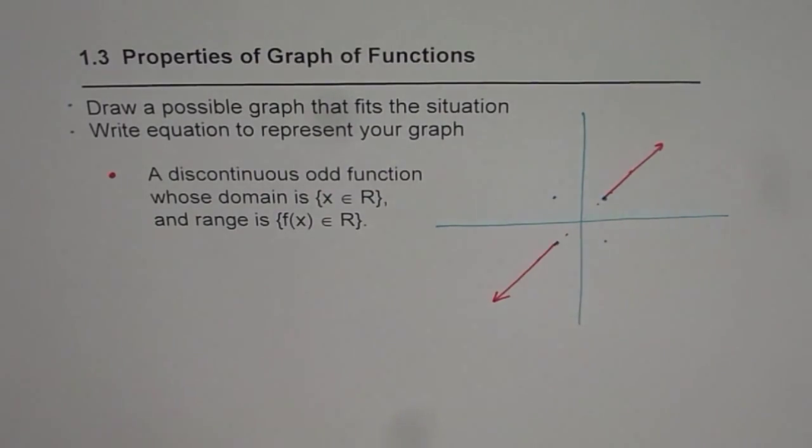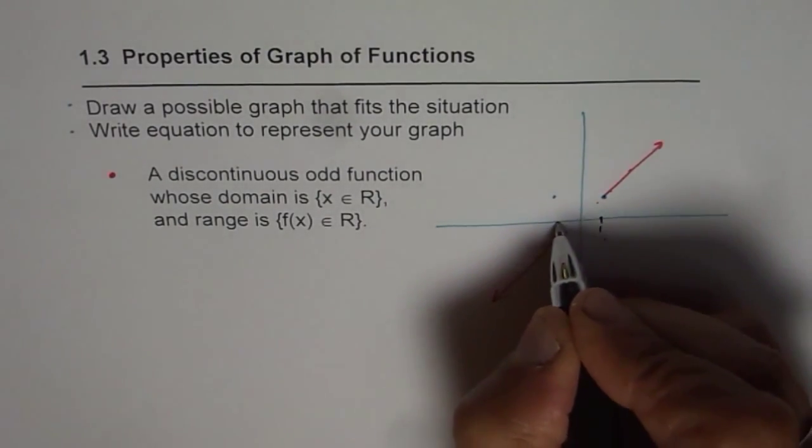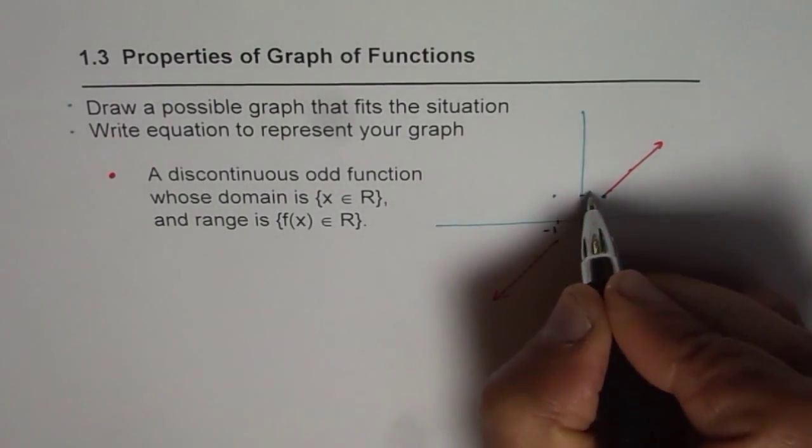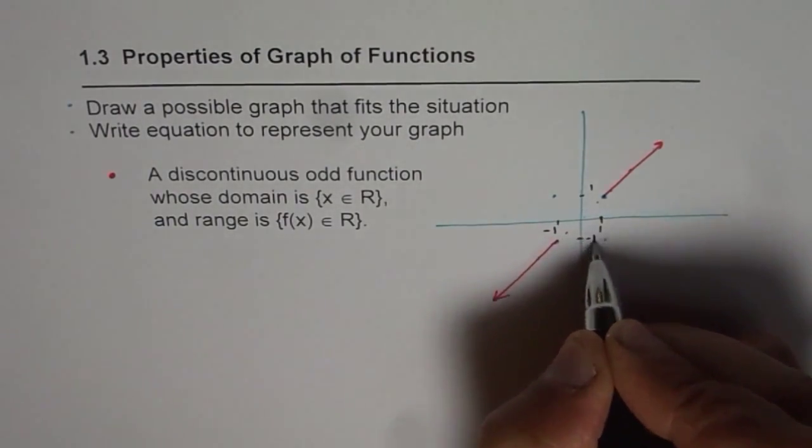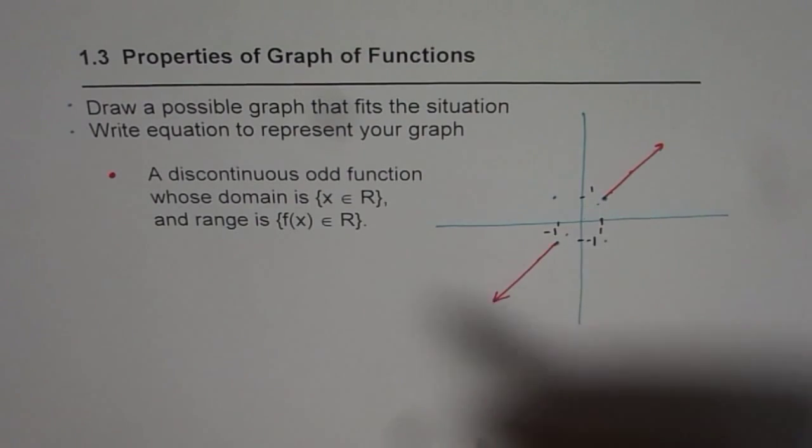And let us say, the points which we have here are one and minus one, this is also one for us, minus one. So this is the odd function.